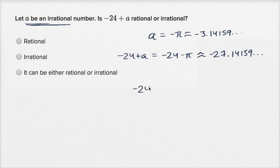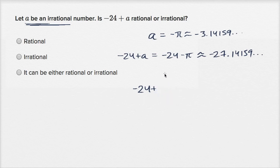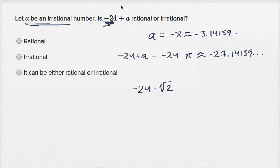And if A was the square root of two, then negative 24 plus the square root of two would have a decimal expansion that goes on forever and never repeats. It would just change what's to the left of the decimal, but the decimal part still goes on forever without repeating — you'd have something like negative 25 point whatever. So when you add a rational number to an irrational number — and we've proven this in other videos — a rational plus an irrational is going to be irrational.